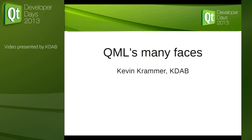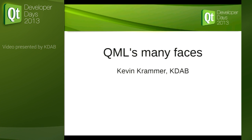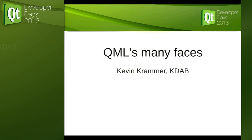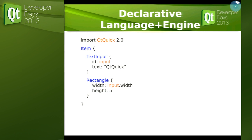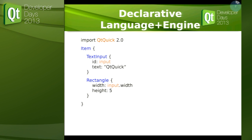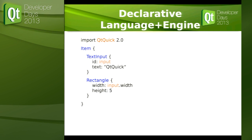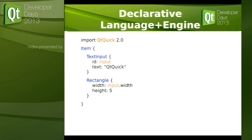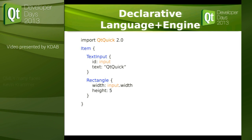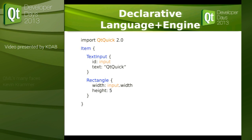QML is often used synonymous with QtQuick, but QtQuick is just one application of QML. QML is actually a declarative language and Qt has an engine for parsing and processing it.